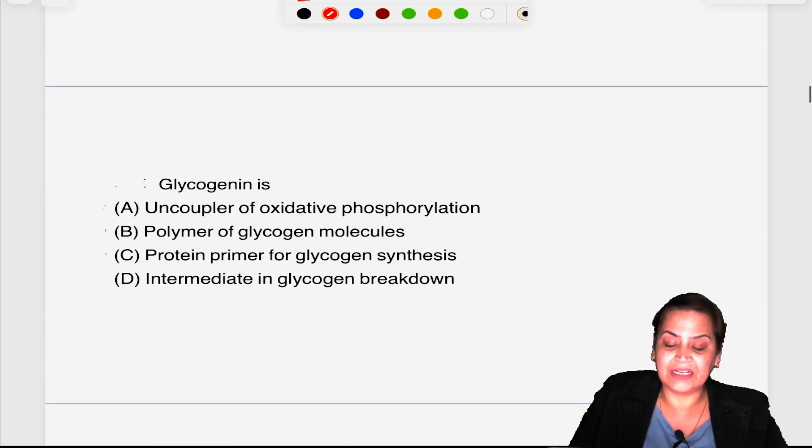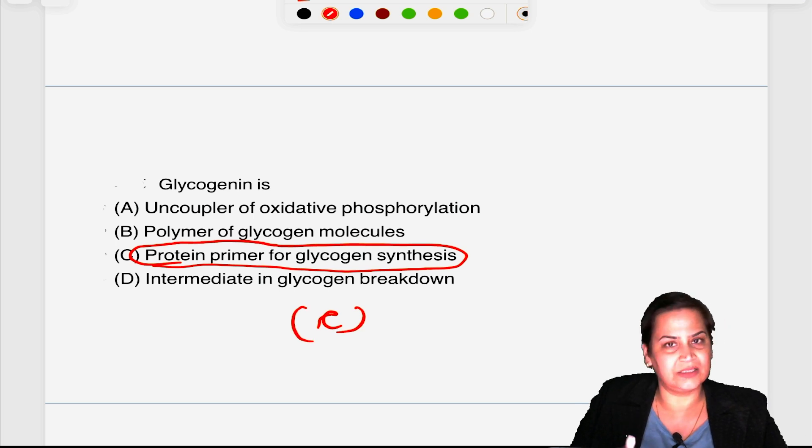Glycogenin: what is it? Glycogenin is simply a primer which is required for the startup of glycogenesis. It's not an uncoupler, but a polymer or protein primer for glycogen synthesis. This is a very simple question.